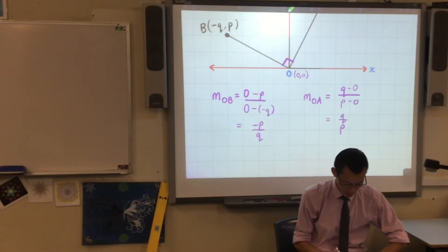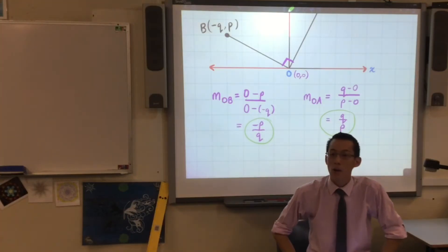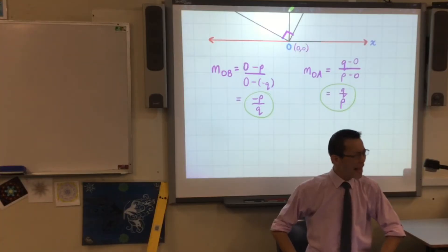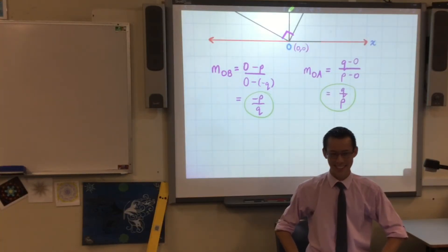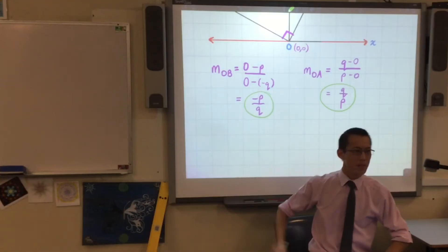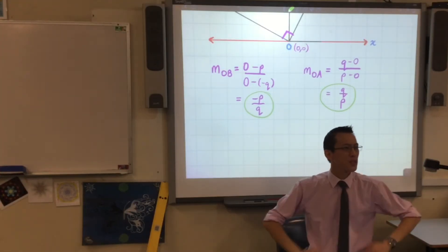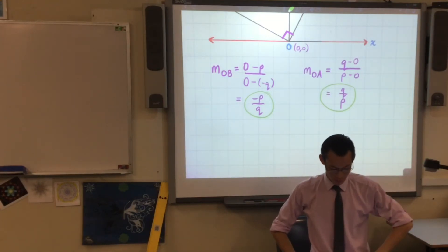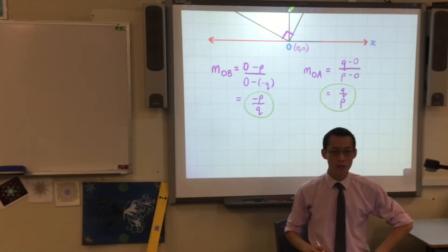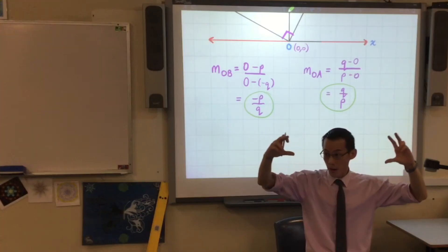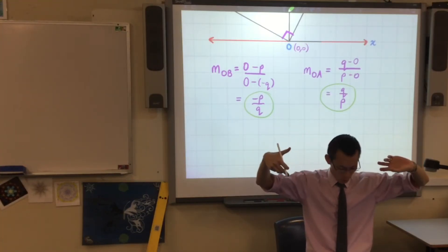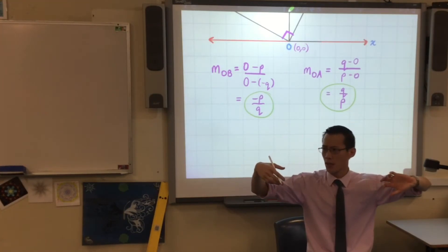Now, have a look at these two. This gradient, and this gradient. Clearly not the same. How would you describe these two? You notice they're both fractions, right? One fraction is the other one upside down. Do you notice that? We have a name for that when you turn a fraction upside down. We call it the reciprocal.